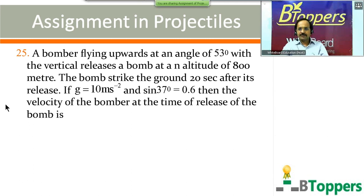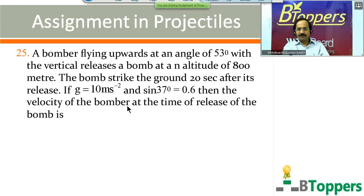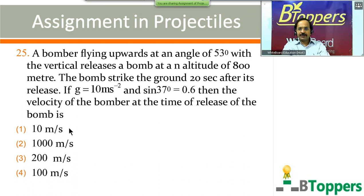Question number 25: a bomber flying upward at an angle of 53 degrees with the vertical releases a bomb at an altitude of 800 meters. The bomb strikes the ground 20.6 seconds after its release, g = 10 m/s², sin 37° = 0.6. The velocity of the bomber at the time of release of the bomb is — four options are shown on screen. Come on, try the question.